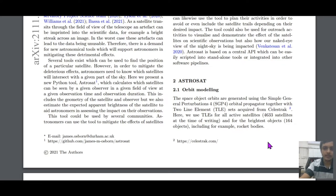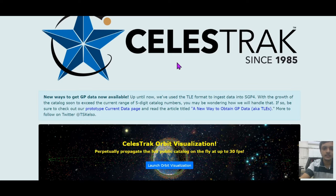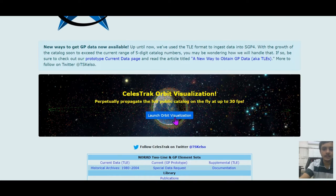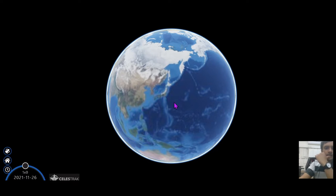There is simple general perturbation orbital propagator. This is how the kind of space object orbits are generated. And this is maintained by a website called Celestrack. So, you can see here. You can see the entire orbit visualization if you want to see it. Just bear with me for a second.